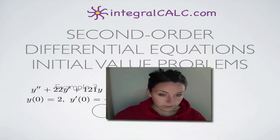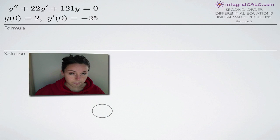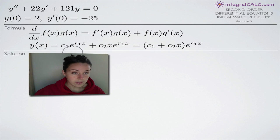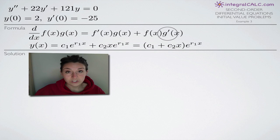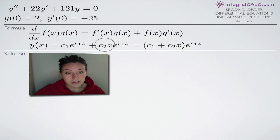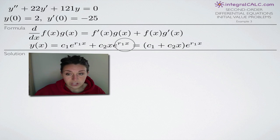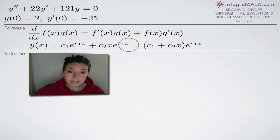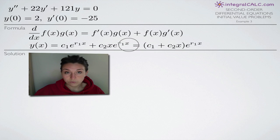The first thing we're going to need is a couple of formulas. We'll be using the product rule, which is this first formula here, which we should be familiar with at this point. The second one is this formula here for second order differential equations when we have equal real roots. We're usually either dealing with distinct real roots, equal real roots, or complex conjugate roots, which we'll talk about as well in a second.